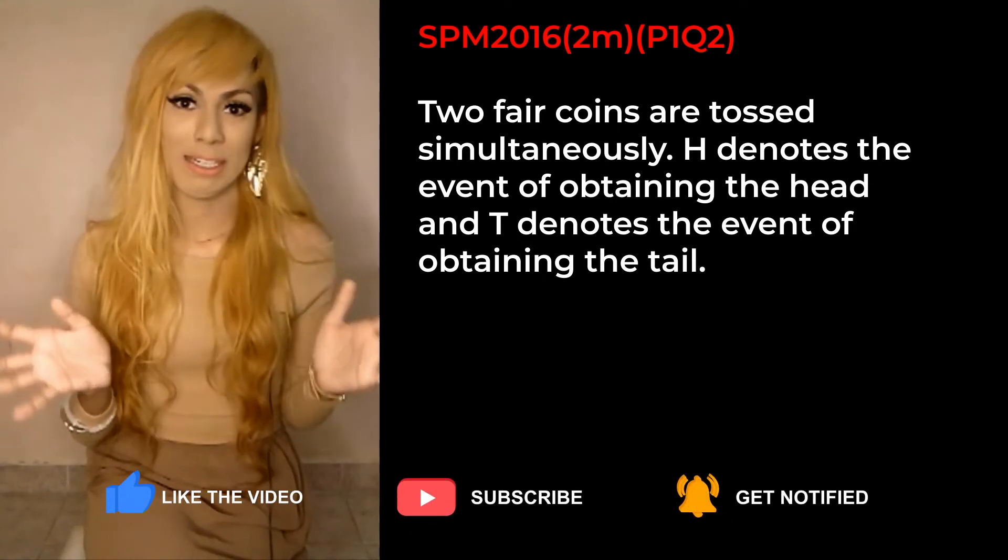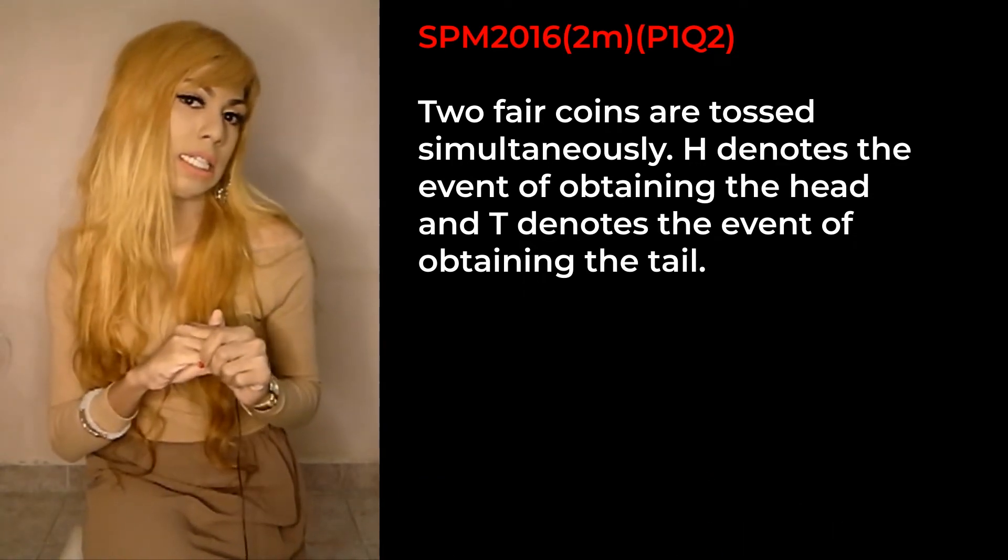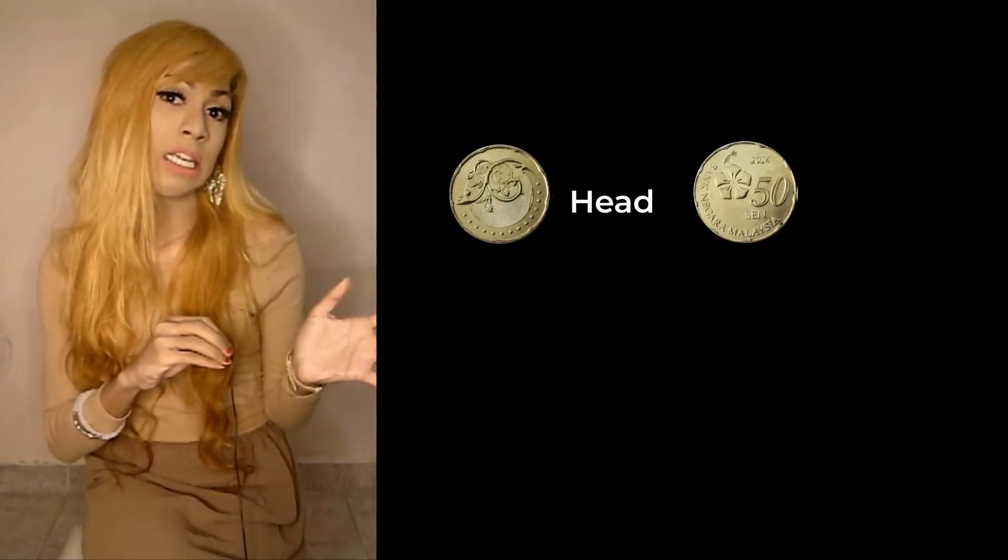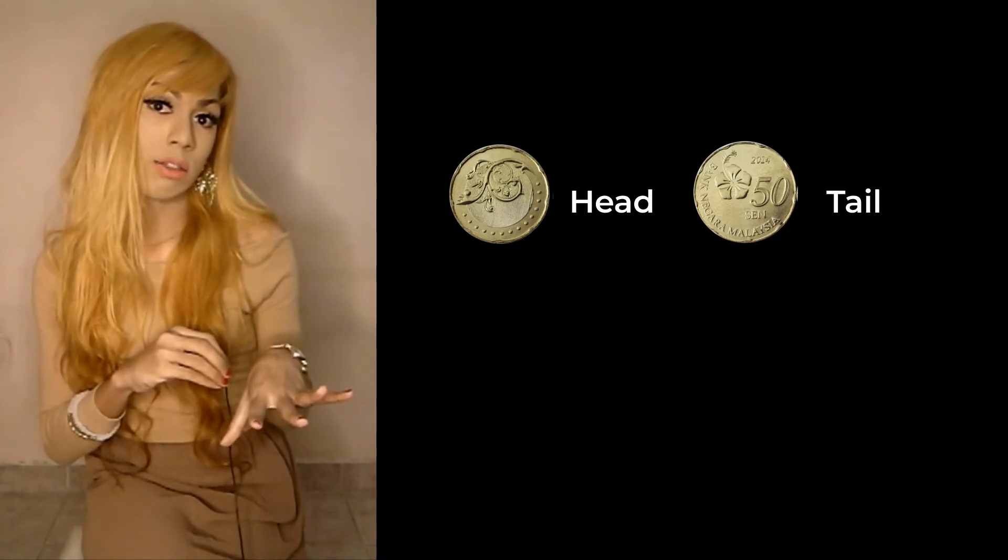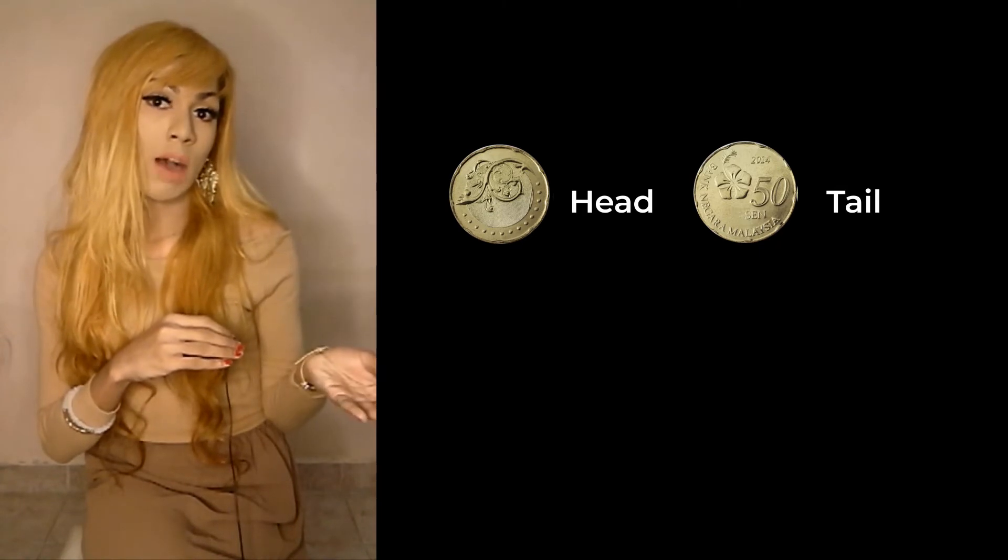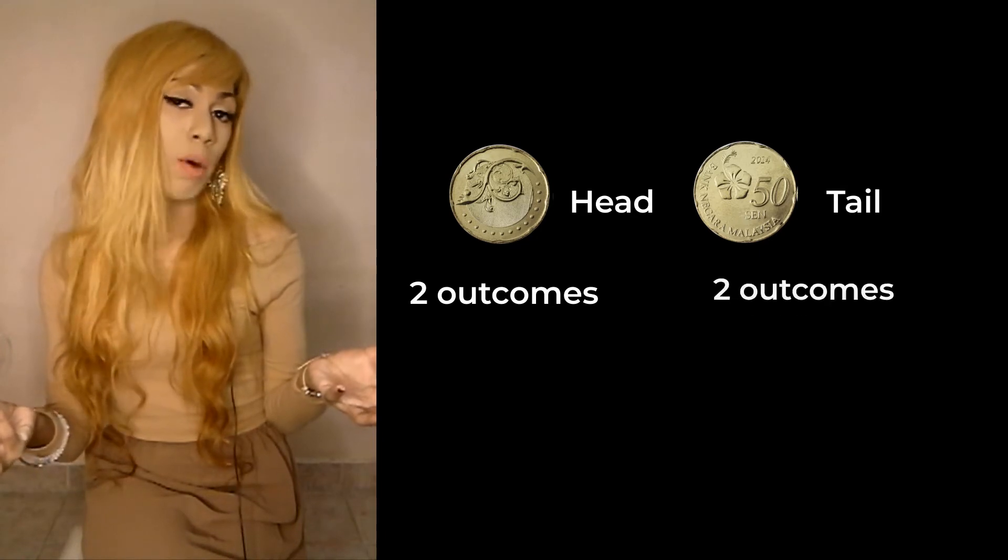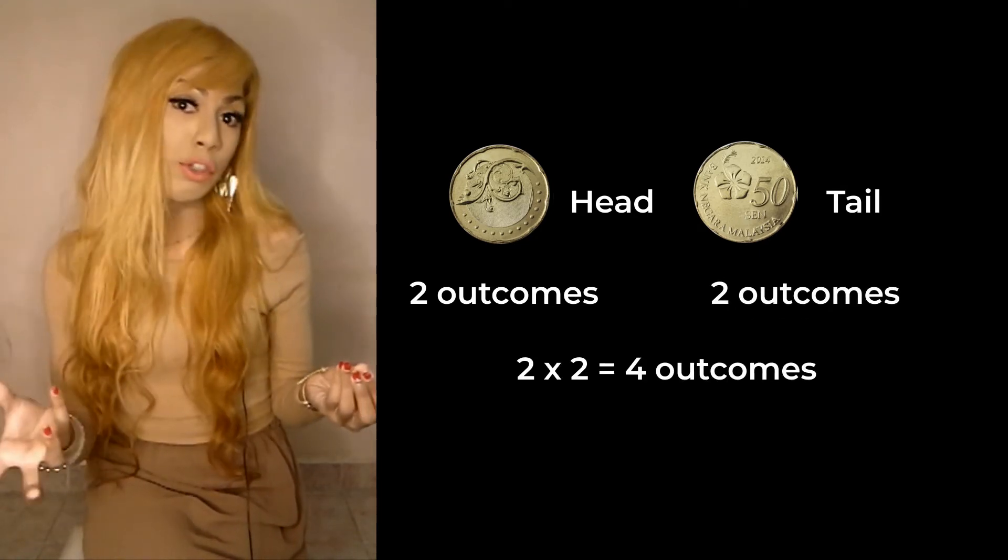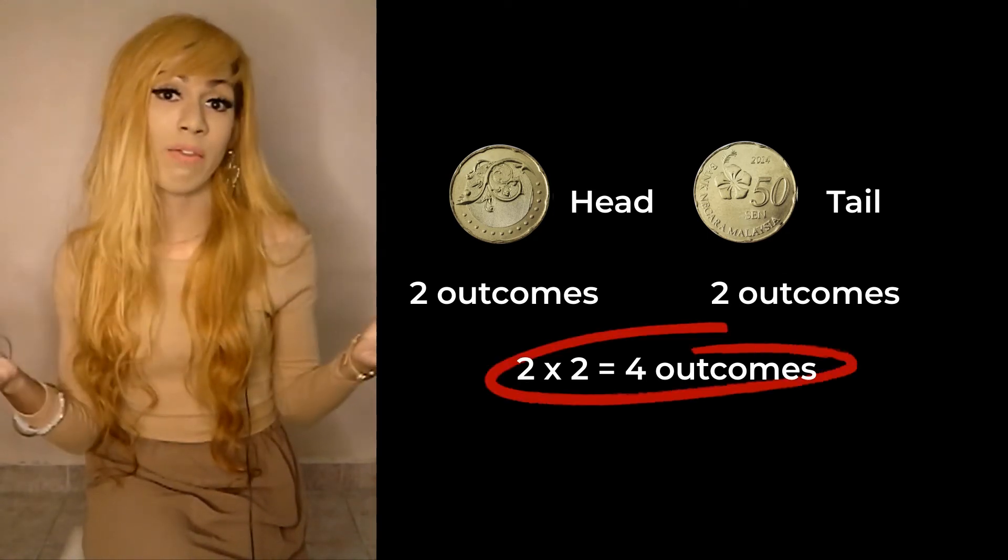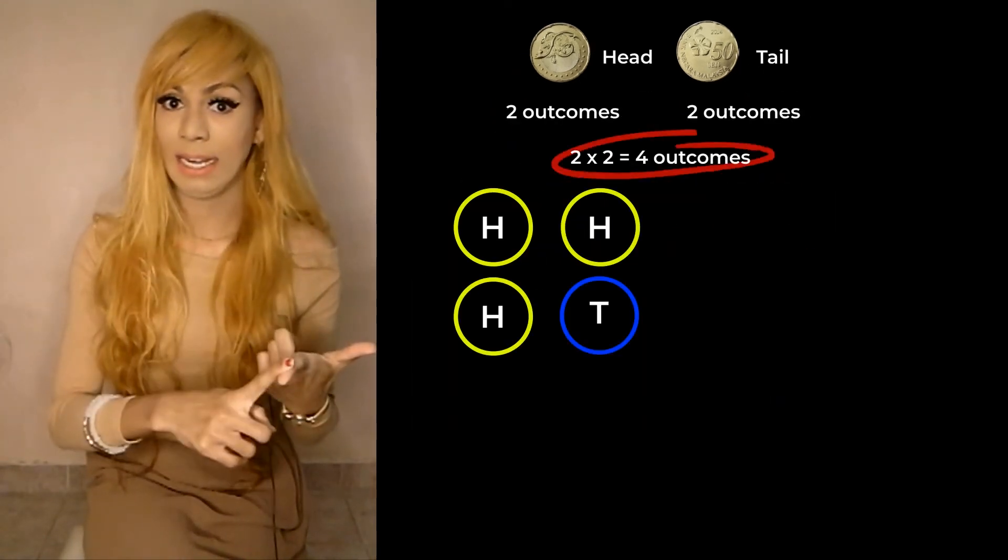Two fair coins are tossed simultaneously. So obviously when we talk about coins we only have two outcomes which is head or tail. If we toss them simultaneously, first outcome we have two possible outcomes, for the second coin we have two possible outcomes. So 2 times 2 we're gonna have 4.